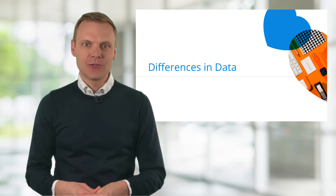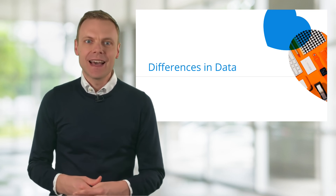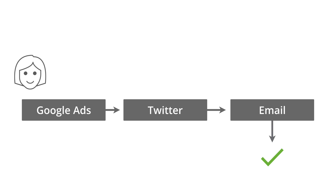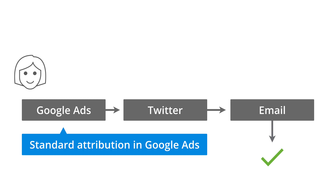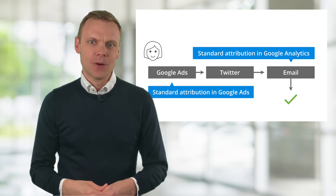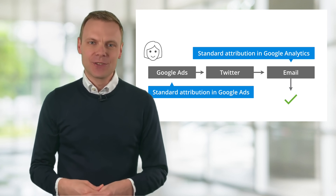Before we look at how to set up Google Ads conversion tracking, I want to cover the differences you might find when comparing data inside Google Ads to Google Analytics. These differences are generally the result of attribution. For example, someone might first come to our website from a Google Ads campaign, then from Twitter, before finally converting from an email campaign. Google Ads would show a conversion since there was a click from our campaign, while Google Analytics would attribute the conversion to the email campaign.